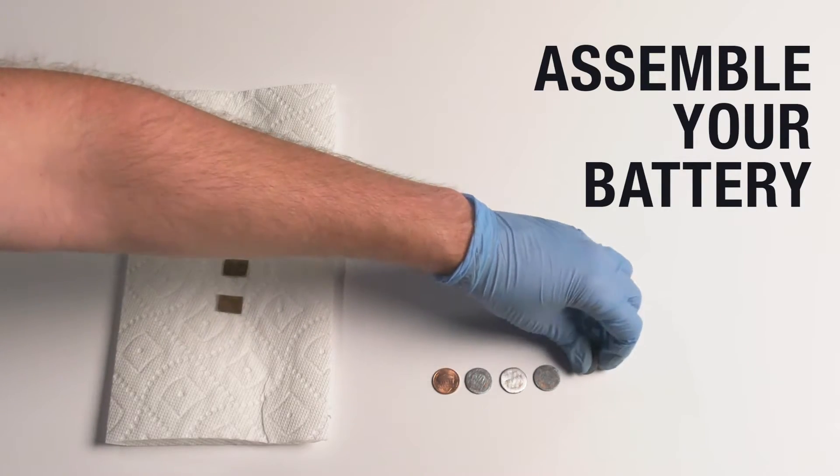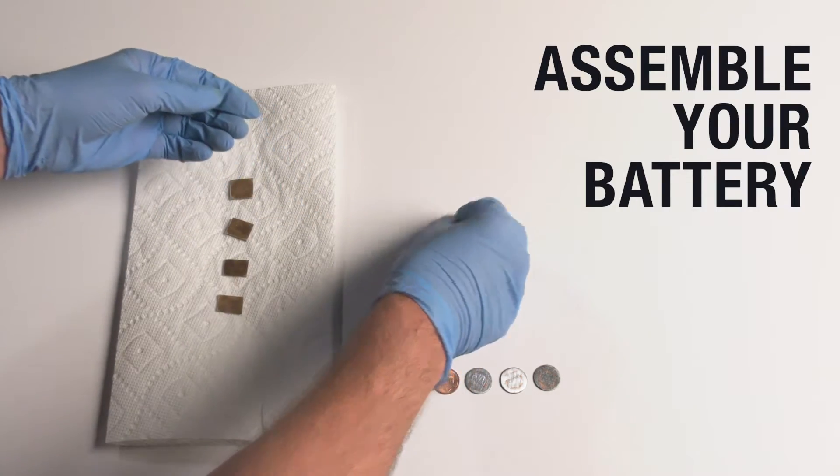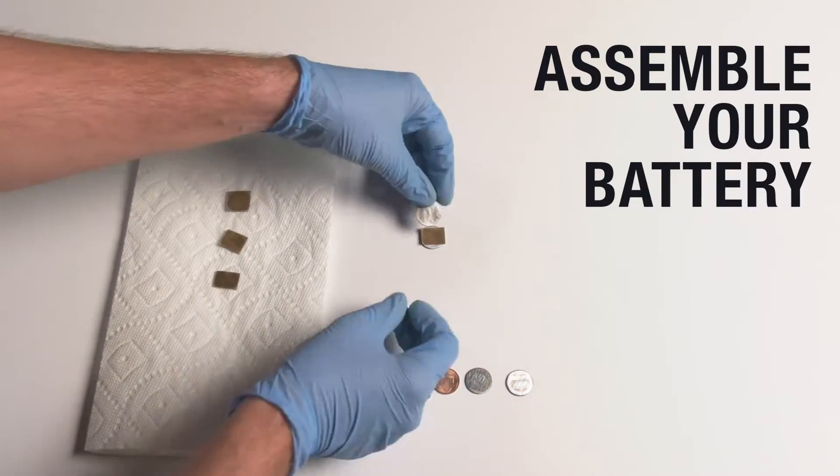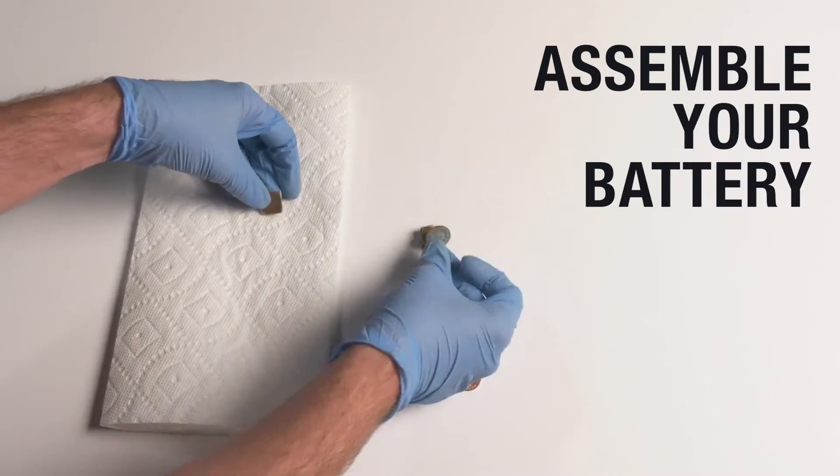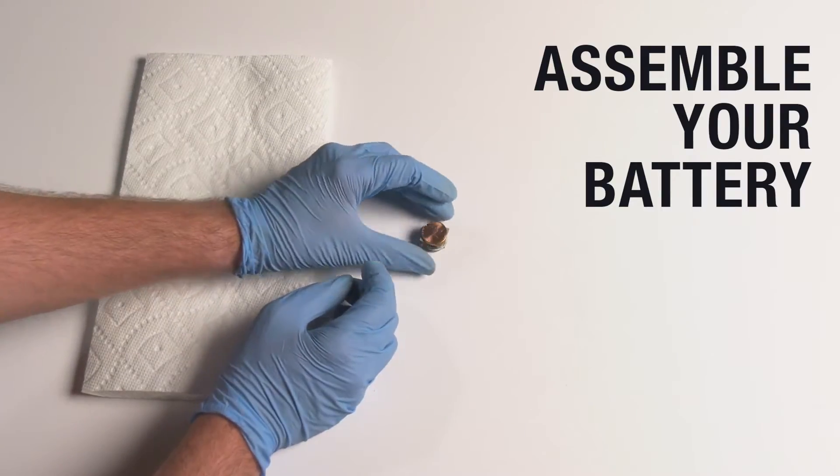Start assembling the battery. Set a sanded penny copper side down and then place a piece of damp cardboard on top of it. Repeat until all that is left is the unsanded penny.